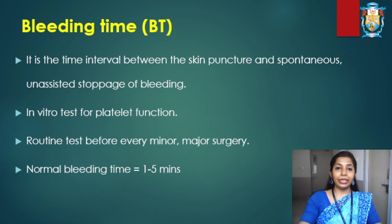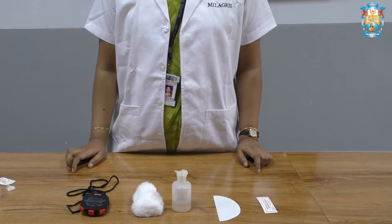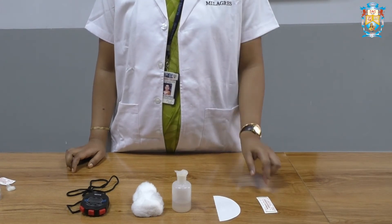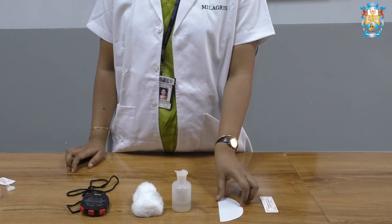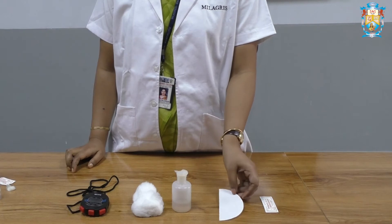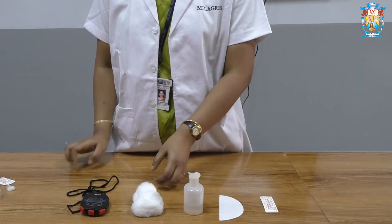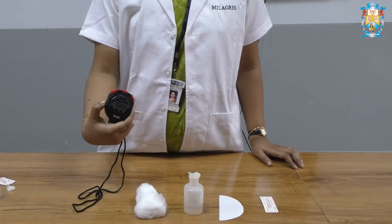Materials required for determination of bleeding time are: sterile lancet, filter paper, surgical spirit, cotton, and stopwatch.